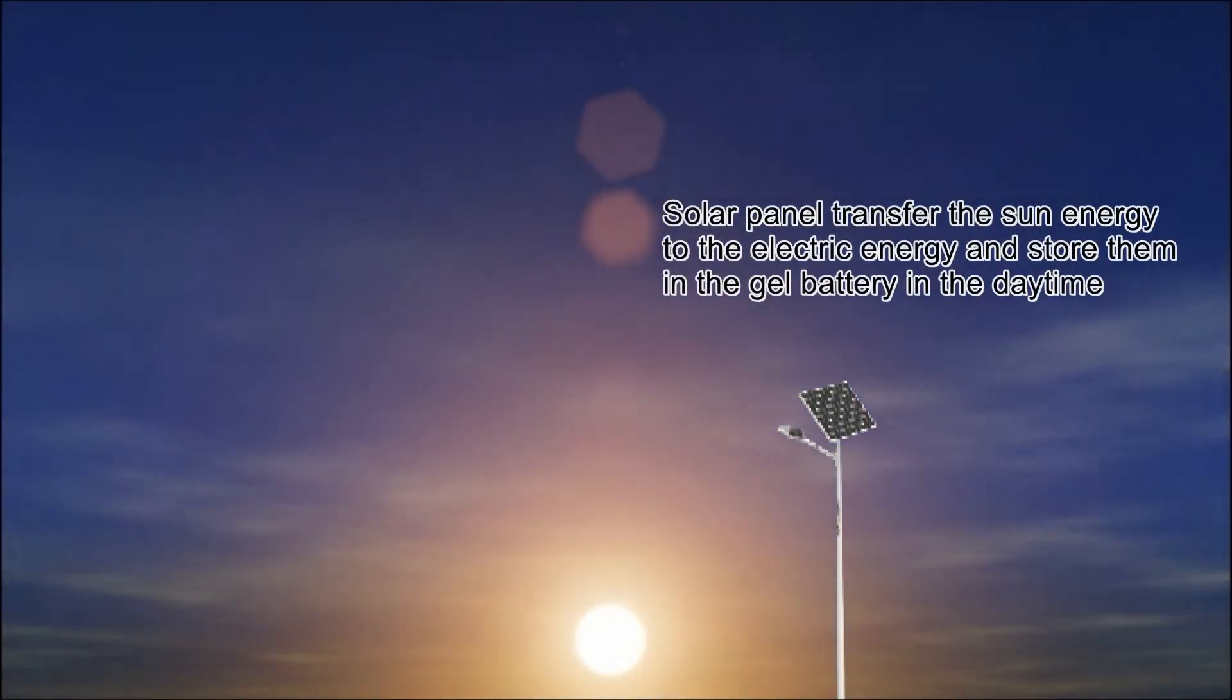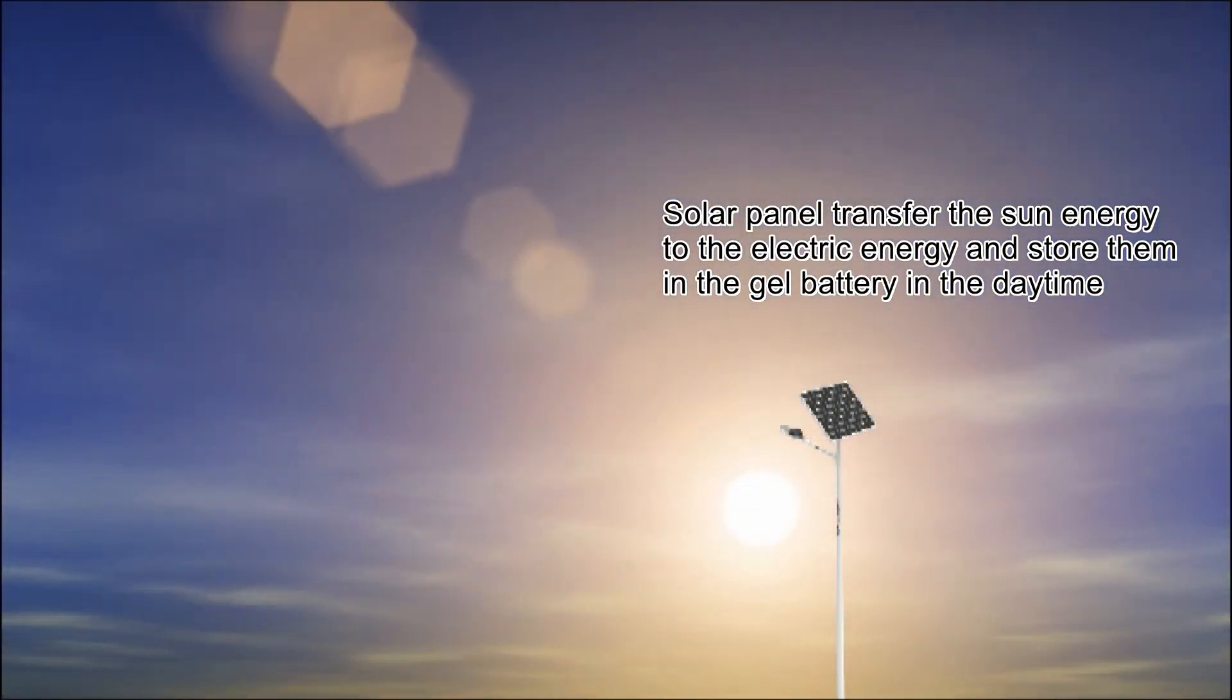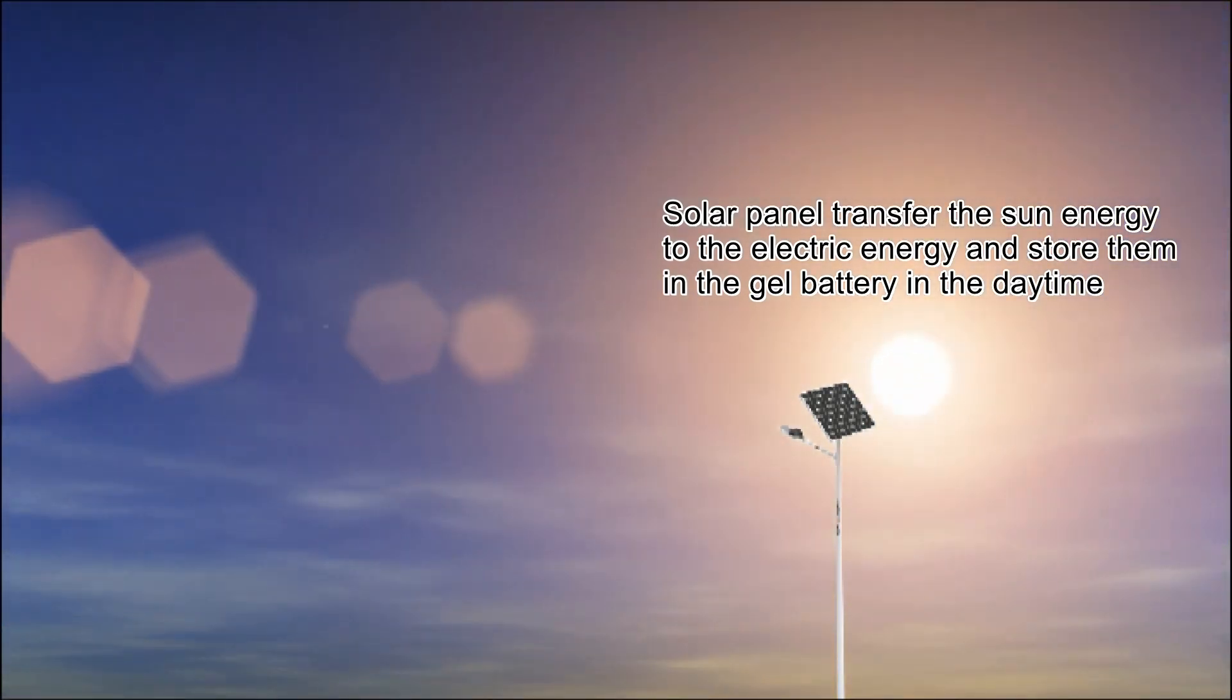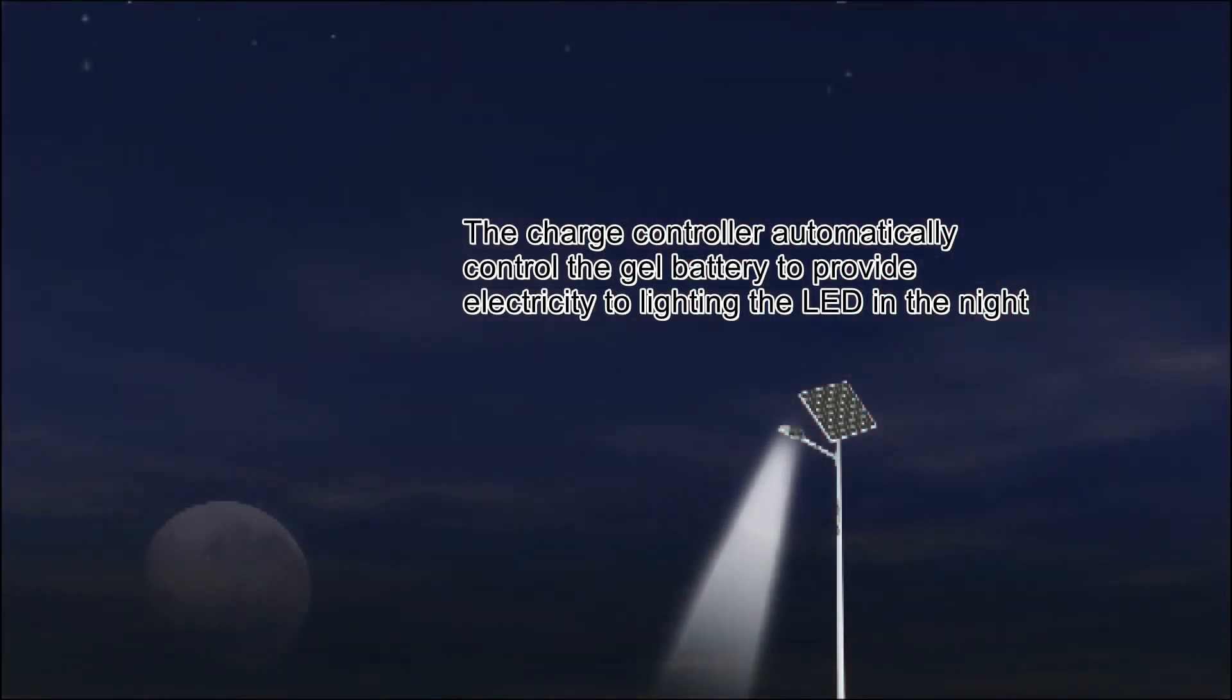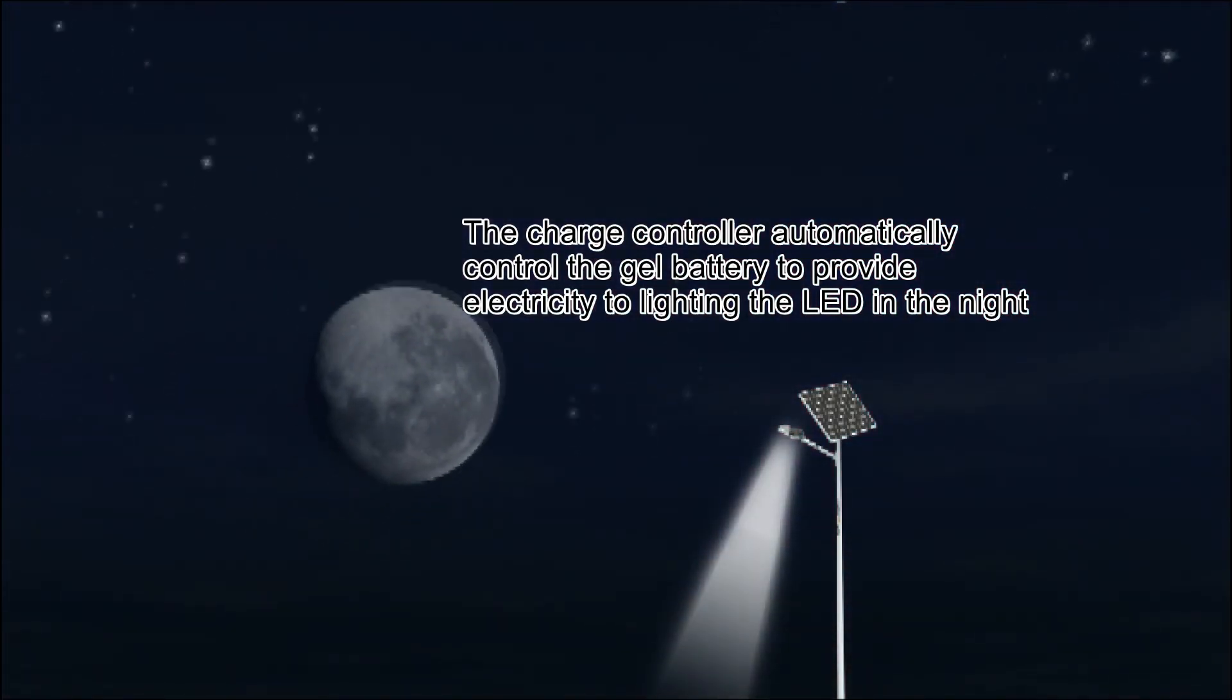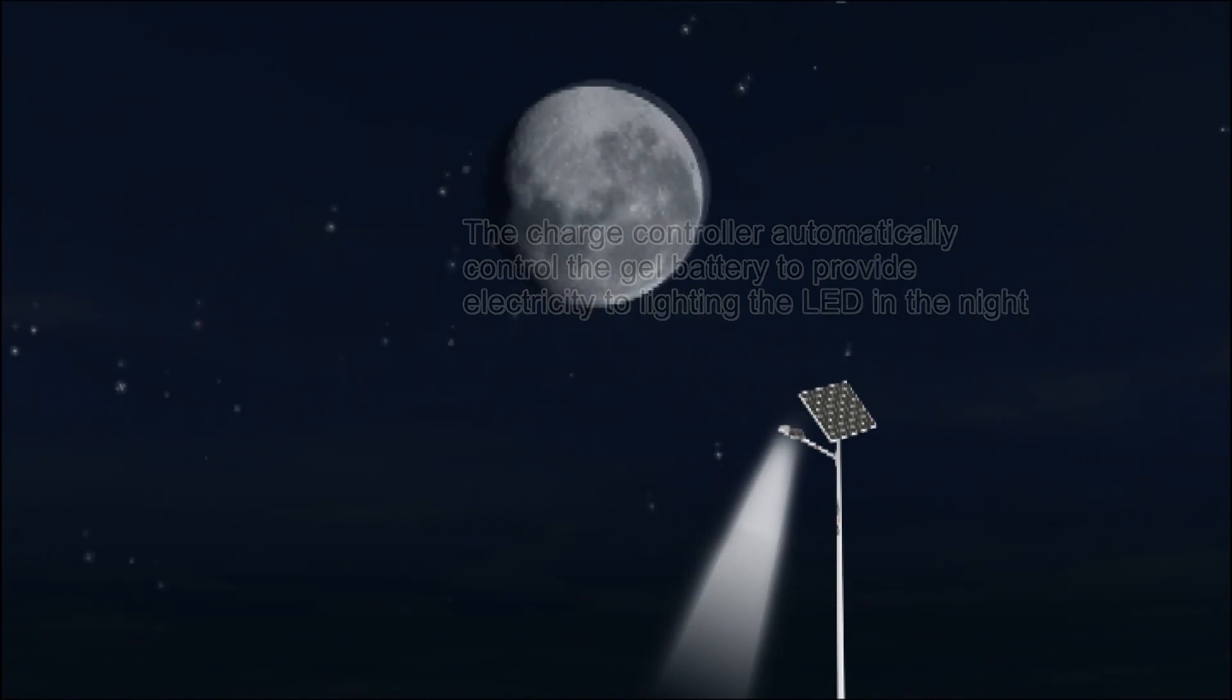Solar panel transfers sun energy to electric energy and stores it in the gel battery in the daytime. The charge controller automatically controls the gel battery to provide electricity to lighting the LED at night.